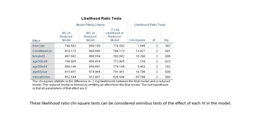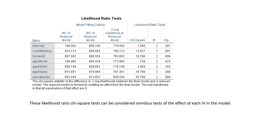These are likelihood ratio chi-square tests that can be considered omnibus tests of the effect of each independent variable in the model. Looking at the significant predictors, we have COVID made up, the female ID variable, the age 65 plus dummy variable, and education level being statistically significant in the model.